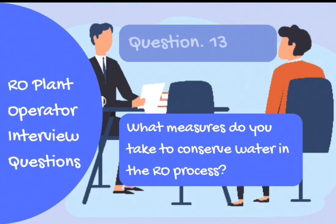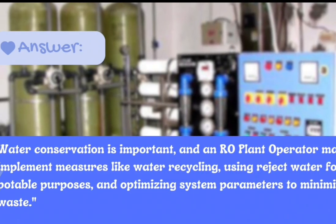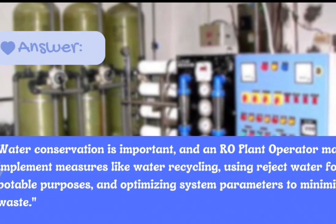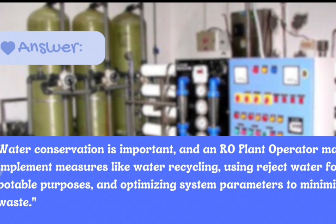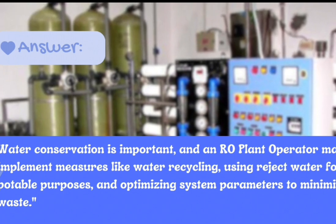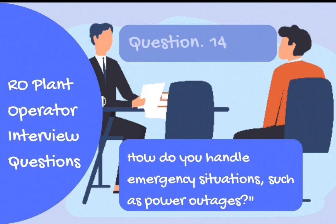Question number 13: What measures do you take to conserve water in the RO process? Answer: Water conservation is important, and an RO plant operator may implement measures like water recycling, using reject water for non-potable purposes, and optimizing system parameters to minimize waste.